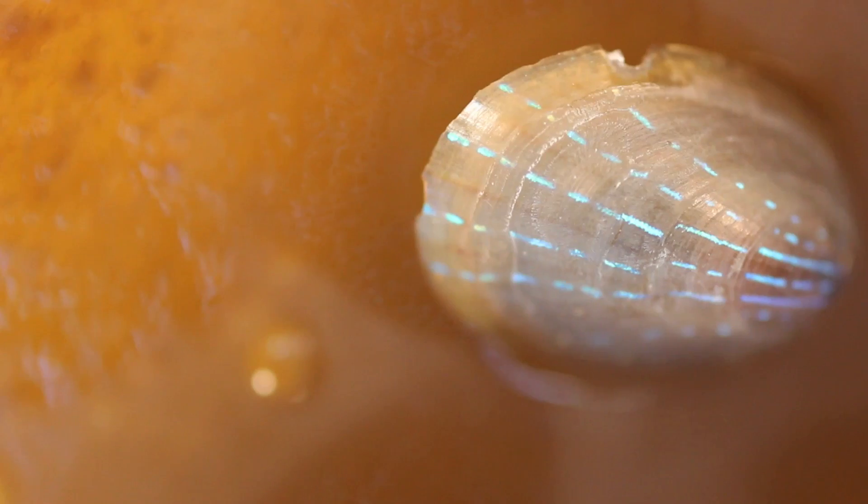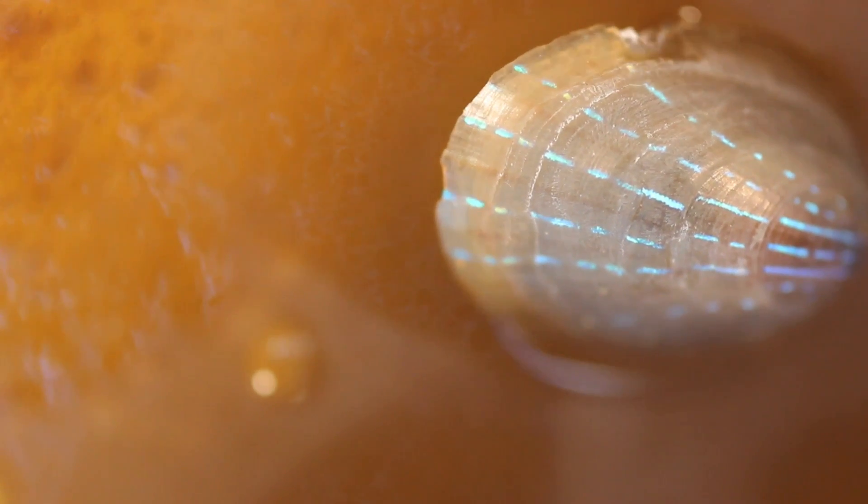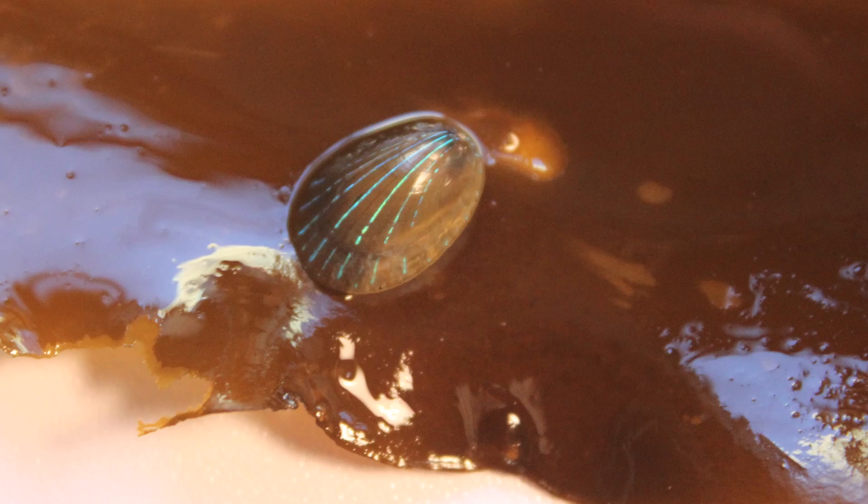Now, scientists at MIT and Harvard University have identified the two optical structures within the limpet's shell that give its blue striped appearance.